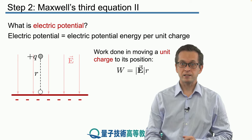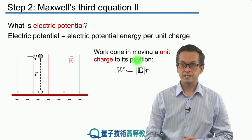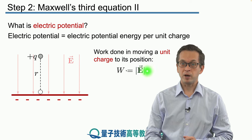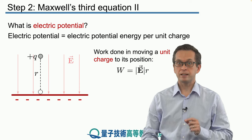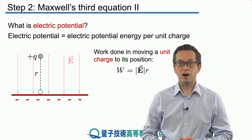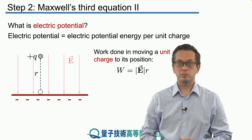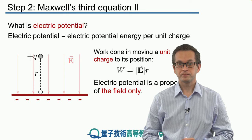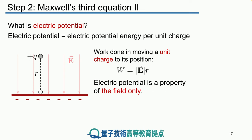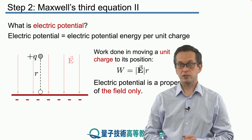So in this case the work done that needs to be done is given by the magnitude of the electric field times the distance r away from the conducting charged metal plate. And now we see that this is the property of only the field itself and it doesn't depend on the charge itself.